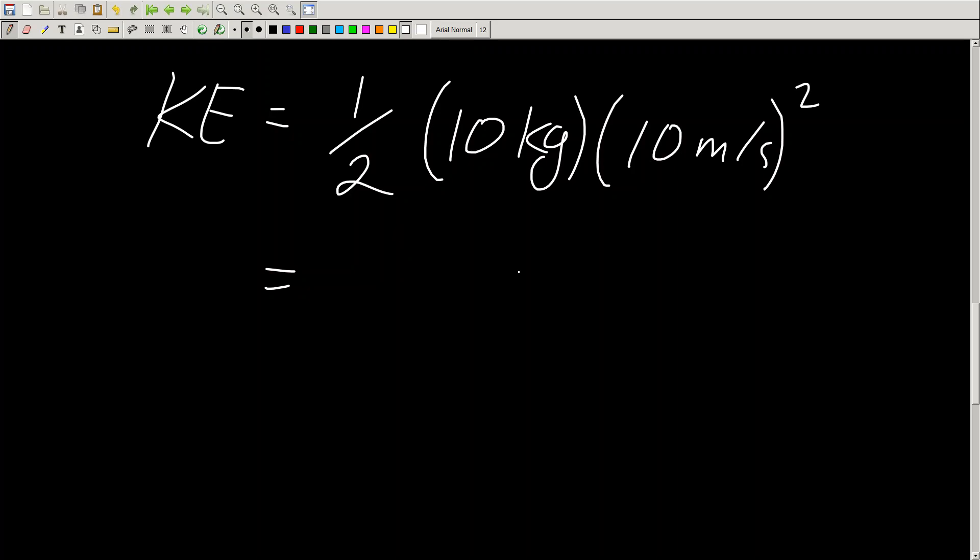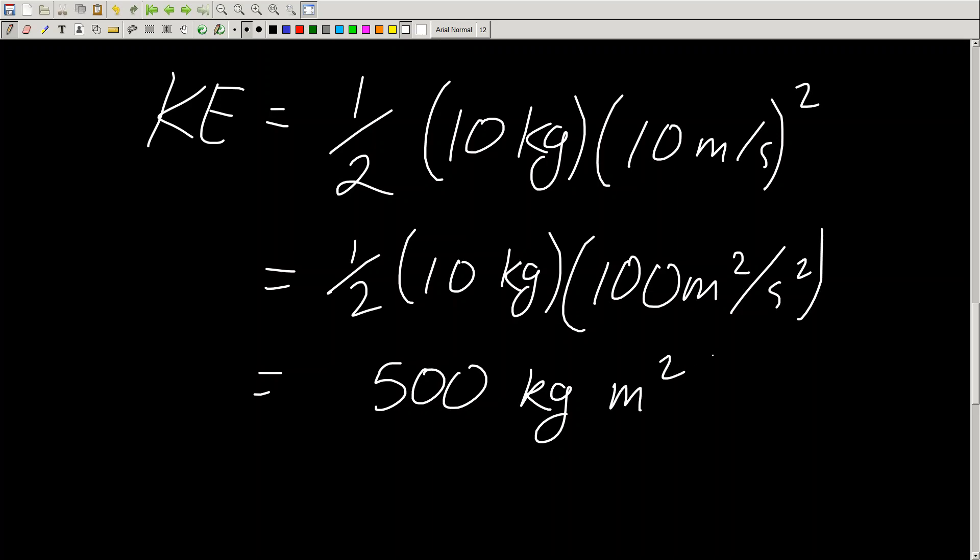And I can use my BEDMAS if I'd like. So one half times 10 kilograms times 100 meters squared per second squared. Multiply it out. I get 500 kilograms meters squared per second squared.